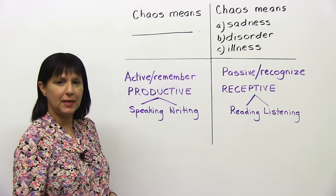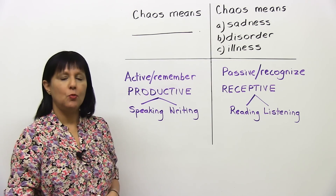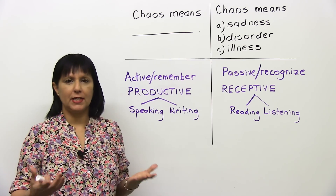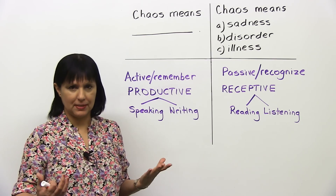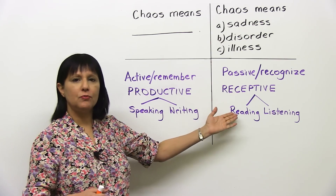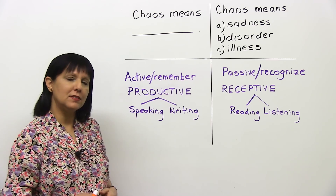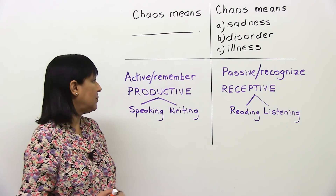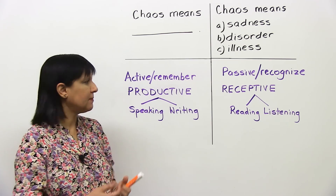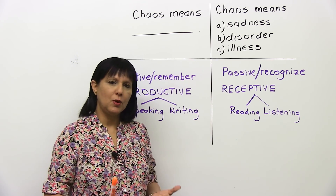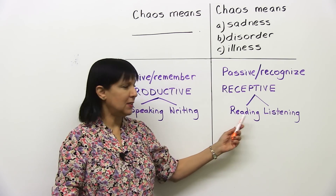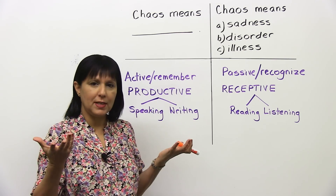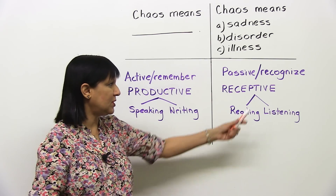In the fill-in-the-blank question, you were asked to remember the answer. When you're trying to remember a word, you're using your active vocabulary. In English, like any other language, you have two kinds of skills: productive skills and receptive skills. Productive skills are what we use when we are speaking and writing, because we have to remember words in order to do that. Receptive skills are what you use when you're reading or listening, because you just have to recognize the words — you have to recall what they mean, but you don't have to think of them by yourself.